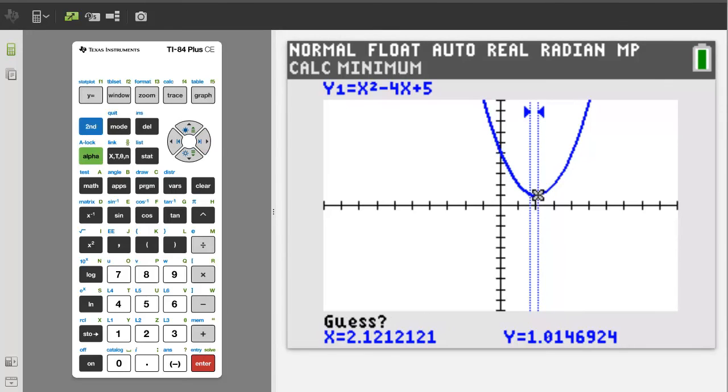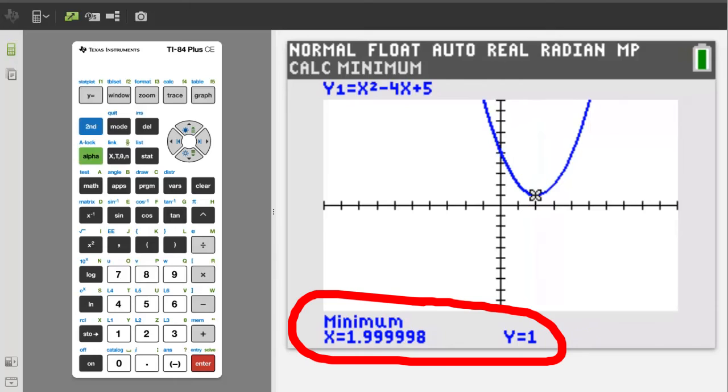Move the cursor just to the right where we think the minimum is. Then press enter. Then it will ask you to take a guess. Don't guess. Just press the enter button. And there is the answer. The vertex x is at x equals 2 and y equals 1, or the point (2,1).